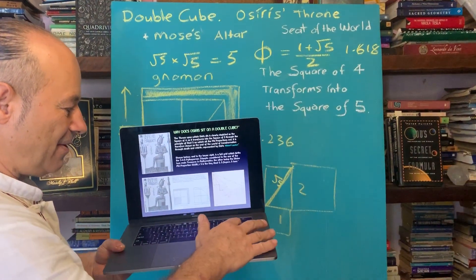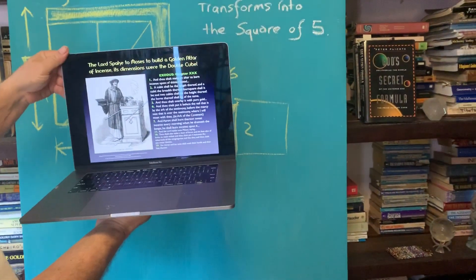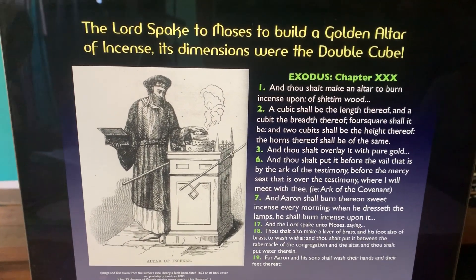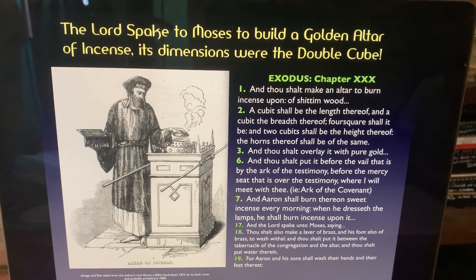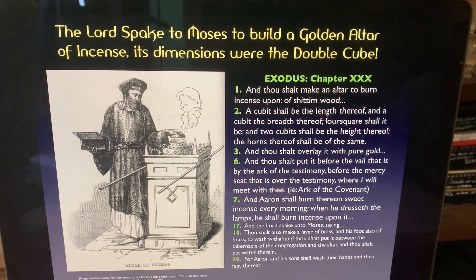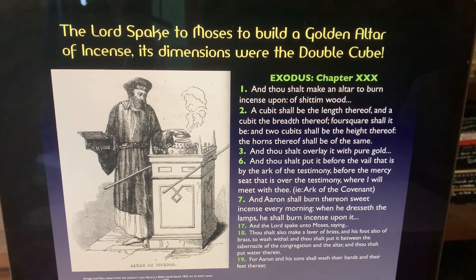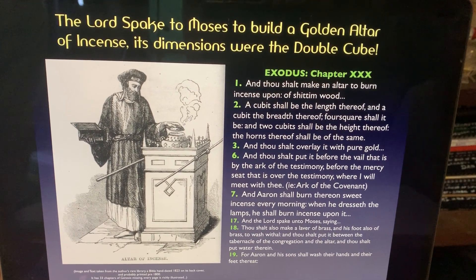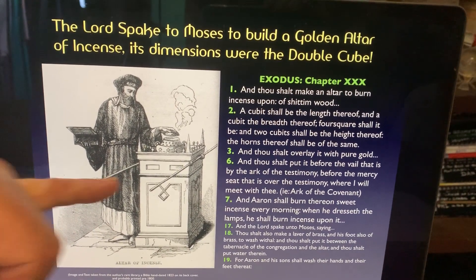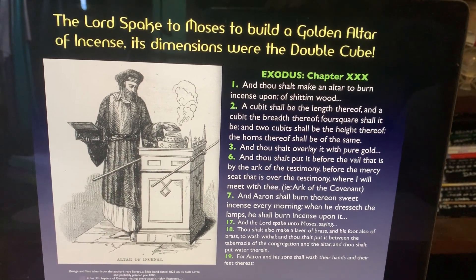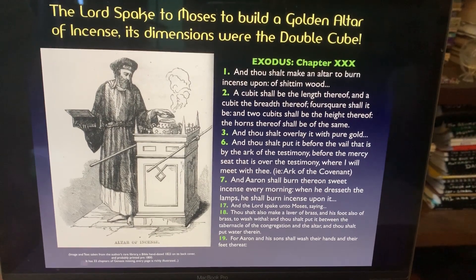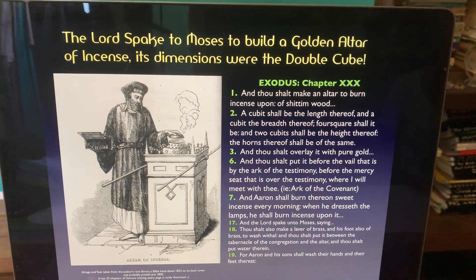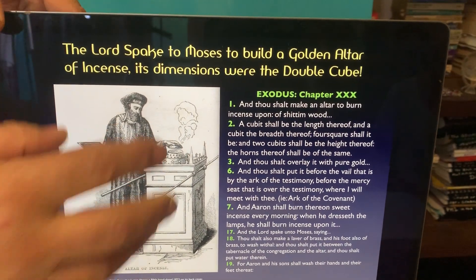Here is another use of root five — the double square — in Moses' golden altar. In Exodus chapter 30 it says: 'And thou shalt make an altar to burn incense upon of shittim wood. A cubit shall be the length thereof, and a cubit the breadth thereof — four square shall it be — and two cubits shall be the height thereof.' That means this altar was based on one by two, which is the double cube again. It was overlaid with pure gold, and it was the way they had a connection with the Ark of the Covenant to communicate with the angels.